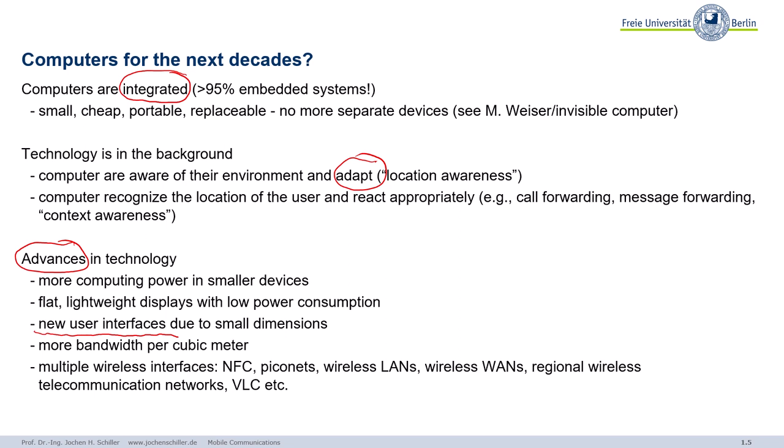What is also quite important is we have more bandwidth per cubic meter. In the early days of mobile communications, we were happy to transmit something like a few kilobits per second. Today, we're talking about hundreds of megabits, even gigabits per second over the air. If you think of the air or the space around us in terms of cubic meters, you can think of how many bits per second we can transmit. The systems of today can really transmit much more data.